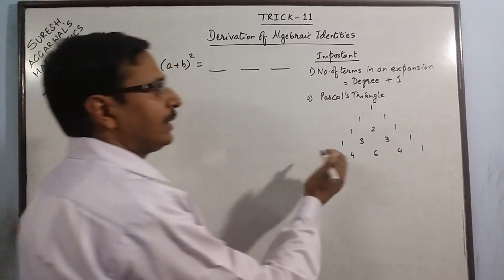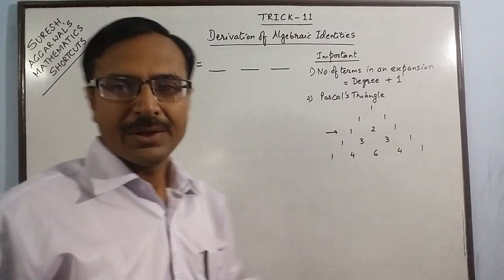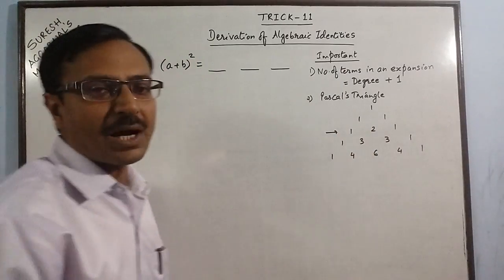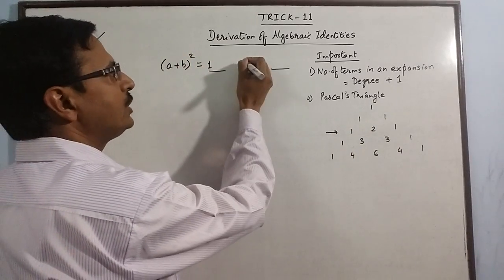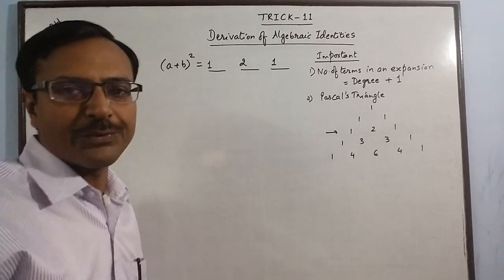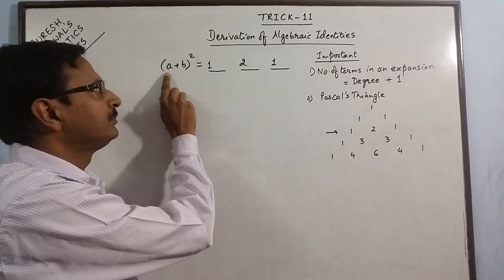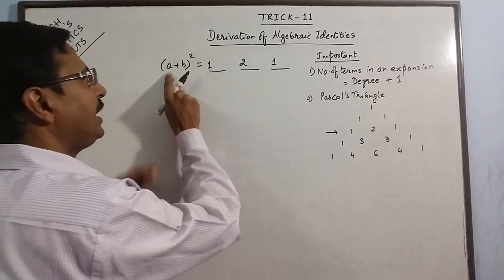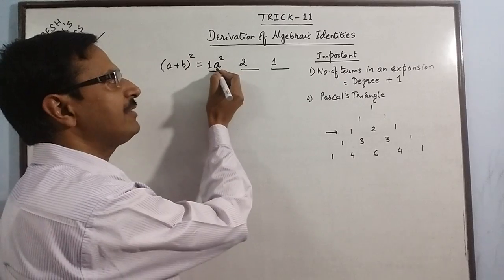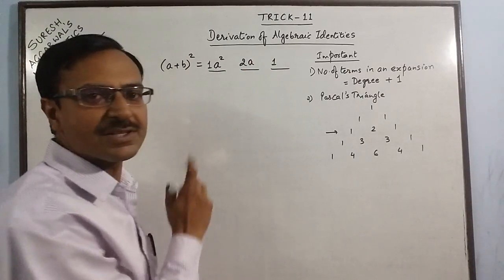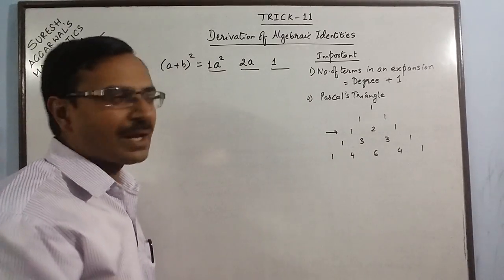The row in Pascal's triangle that contains 3 terms is 1, 2, 1. So these 3 numbers are the coefficients of the 3 terms. I write 1, 2, and 1 as the coefficients. The first term has A with the highest power 2, so I write A squared. Then reduce the power of A by 1: the second term has A to the power 1. In the third term, A has degree 0 so it vanishes.